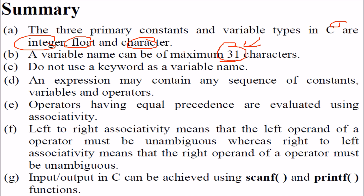An expression may contain any sequence of constants, variables, and operators. When operators have equal precedence, they are evaluated using left-to-right or right-to-left associativity. Left-to-right associativity means the left operand must be unambiguous. Right-to-left associativity means the right operand of an operator must be unambiguous. Input and output in C is done by scanf and printf. This concludes Chapter 1.